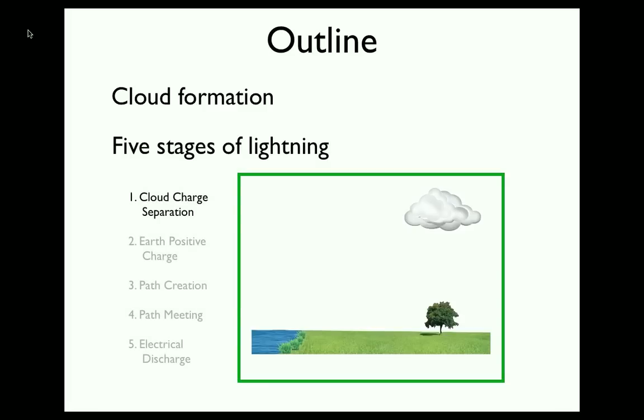Now in the first stage, electrical charges separate within the storm cloud. In the second stage, the Earth acquires a positive charge. In the third stage, two conductive paths are created. In the fourth stage, these paths meet. And in the fifth and final stage, the electricity is discharged in the form of a lightning bolt.